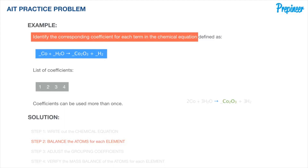Turning our attention to the cobalt oxide element on the product side: we have two cobalt atoms and three oxygen atoms from the reactants, so everything is balanced. Because the number of atoms is equal on both sides, we can place a coefficient of one in front of that substance to establish its coefficient. Here is our balanced chemical equation with the coefficients placed in their appropriate positions.